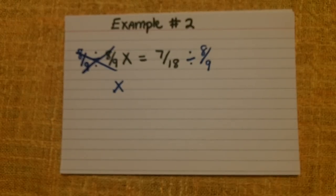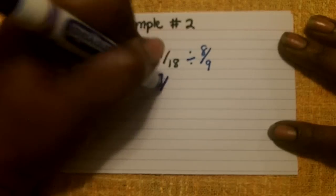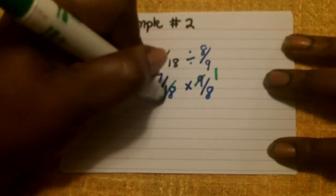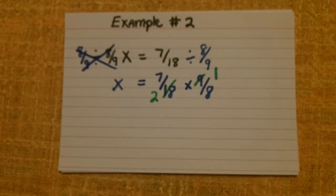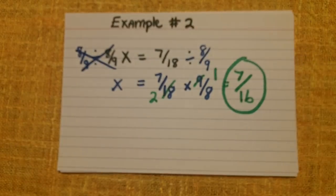The whole goal of solving equations is to isolate the variable, and now we have X alone. We just need to focus on seven-eighteenths divided by eight-ninths. Thinking back to dividing fractions, we copy the first fraction, change division to multiplication, and take the reciprocal of the second fraction. I'm going to cross-cancel first: nine goes into nine once, and nine goes into 18 twice. Then I multiply the numerators and the denominators. The fraction is already simplified from cross-canceling, so the solution for X is seven over 16.